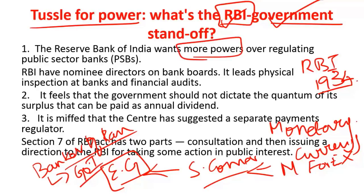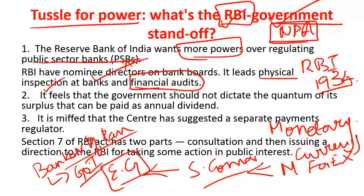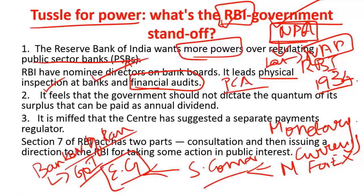The first current issue is that RBI wants more powers for regulating public sector banks. Currently, RBI has nominee directors on bank boards and leads activities such as physical inspections and financial audits of public sector banks. Due to increasing NPAs in public sector banks, and since RBI has limited control over them, it is unable to implement regulatory mechanisms to tackle NPA issues. Another issue is RBI's policy of PCA — Prompt Corrective Action — which RBI uses as a framework to restrict lending of stressed banks.